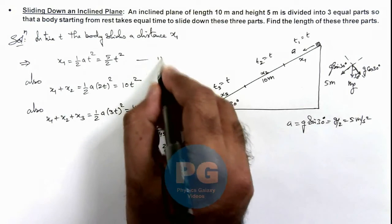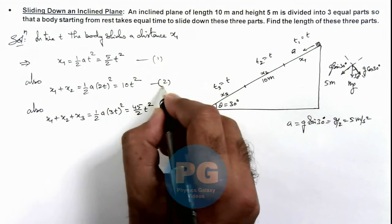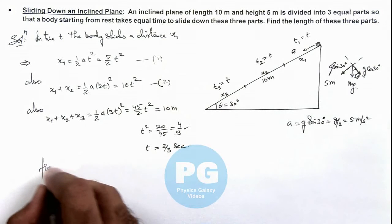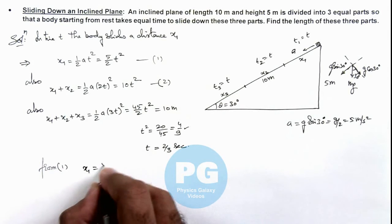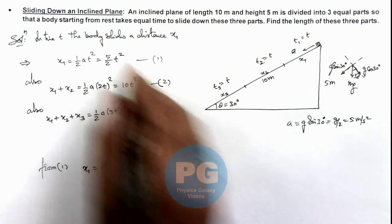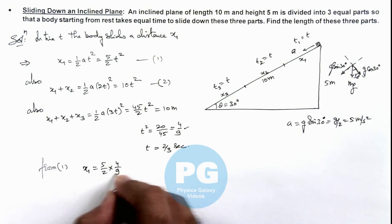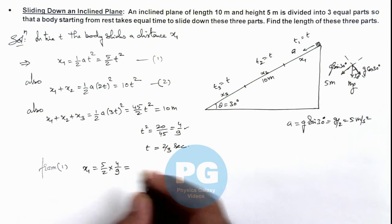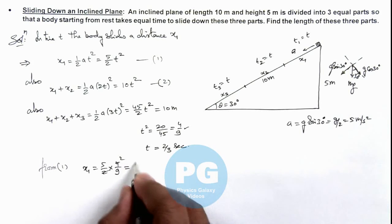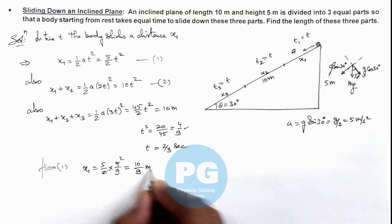So if this is equation 1, this is equation 2. So here I can write from equation 1, x1 is 5 by 2 multiplied by t squared, I can take as 4 by 9, so here the value would be 10 by 9 meters, this is the first length.